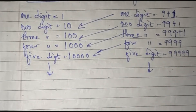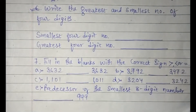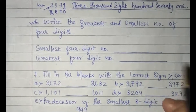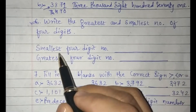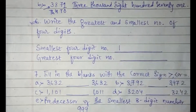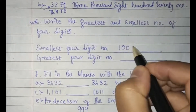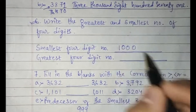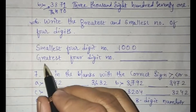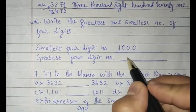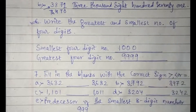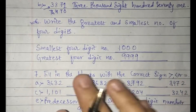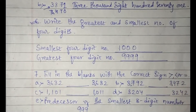Now solving question number six: the smallest four-digit number is 1 followed by three zeros — 1000. The greatest four-digit number uses four nines — 9999. With this, we are done with question number six. For example, the greatest three-digit number is 999, following the same rules.